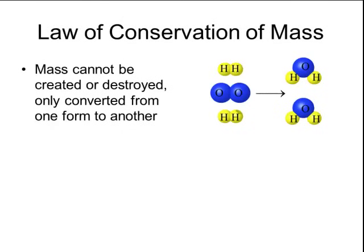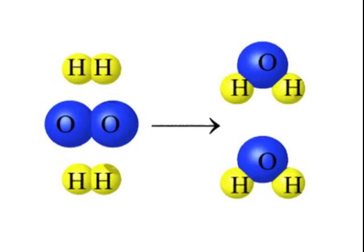When chemical reactions occur, they have to follow the law of conservation of mass. The law of conservation of mass states that mass cannot be created or destroyed — it can only be converted from one form to another. For example, two hydrogen molecules and one oxygen molecule react to form two water molecules (H2O). There are four hydrogens before the reaction and four hydrogens after, and two oxygens before and two oxygens after. All of the atoms present before the reaction are simply rearranged to form a new chemical compound.